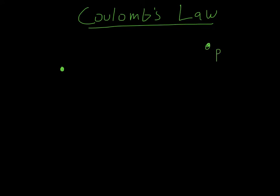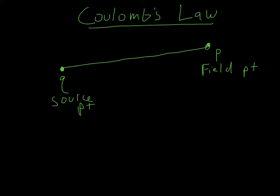What we're interested in is the electric field at some point P due to some source. Our source here is just going to be one single charge. We need to know the distance between the source and the field — I'm going to call that R. The electric field for this simple configuration at point P is going to be one over four pi E naught, consistent with SI units and your book. It's going to be proportional to the charge and inversely proportional to the distance squared.